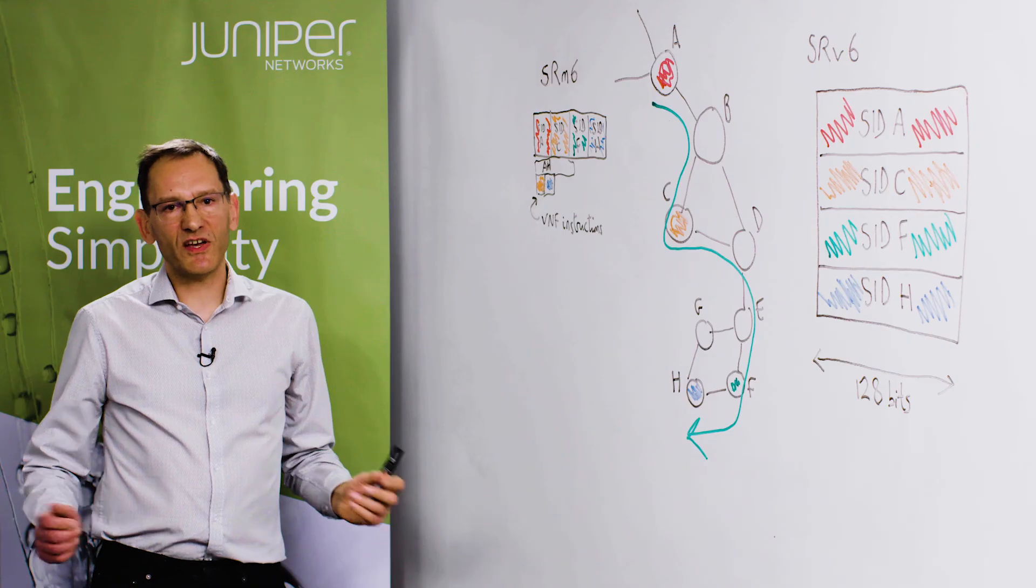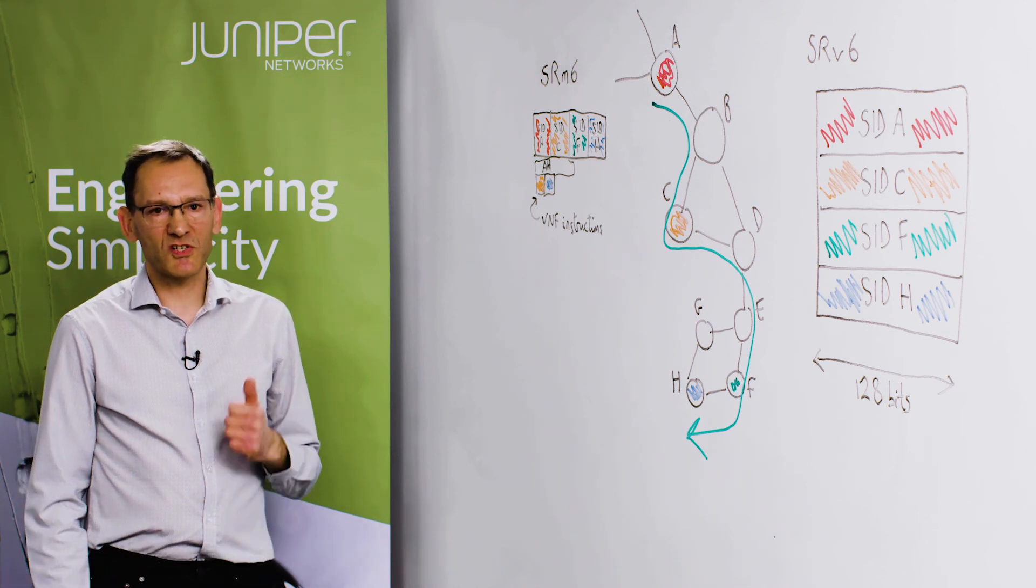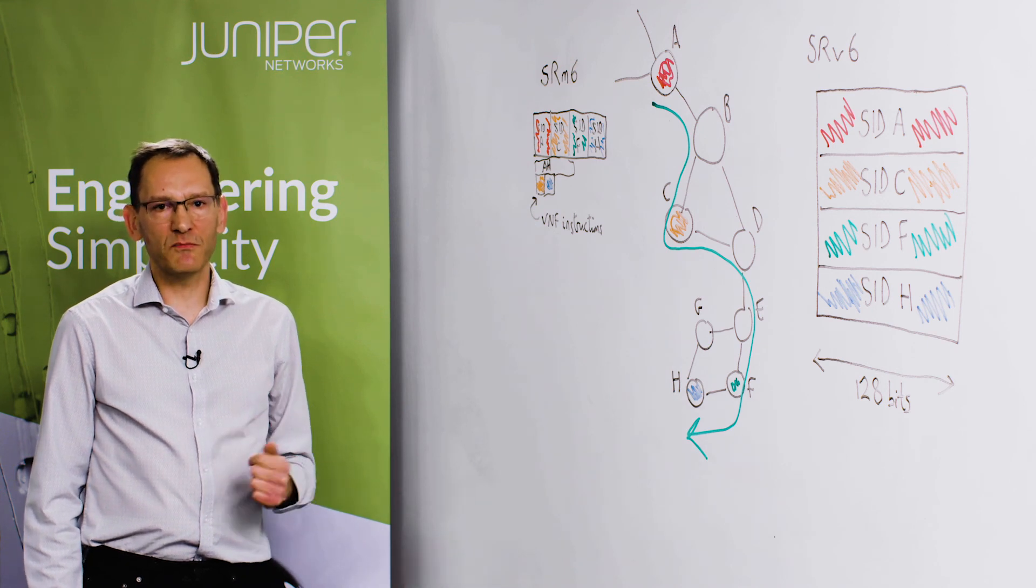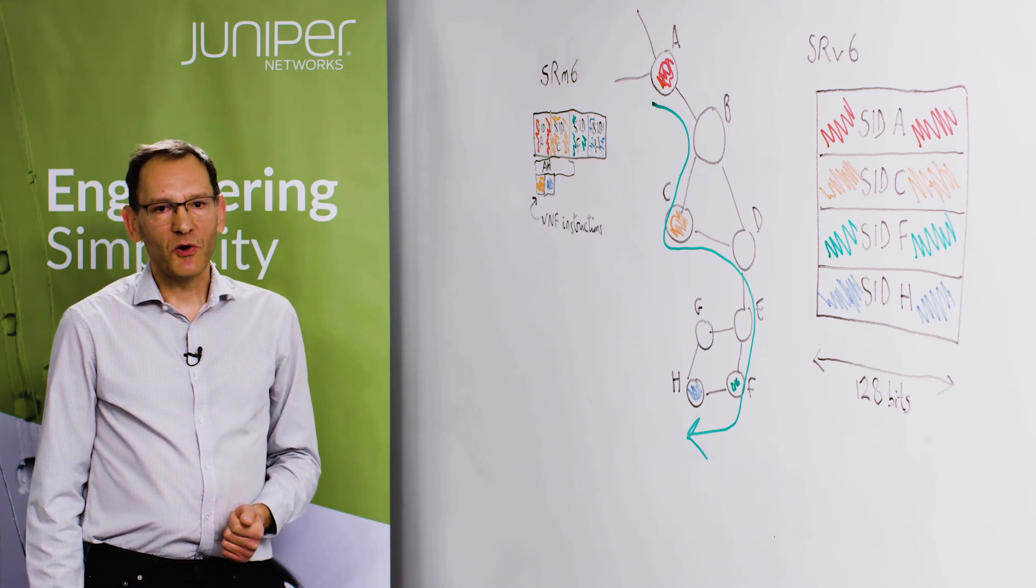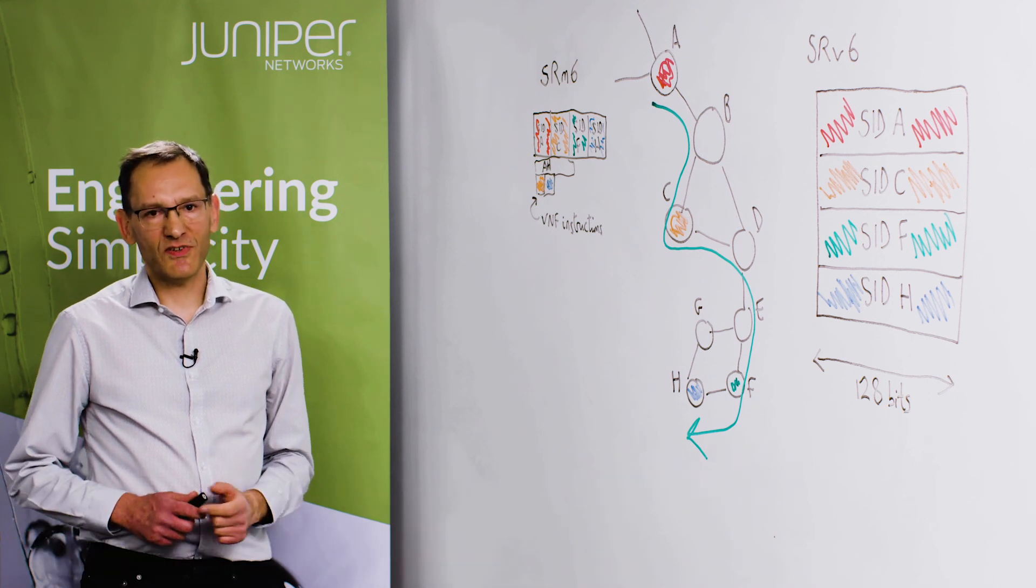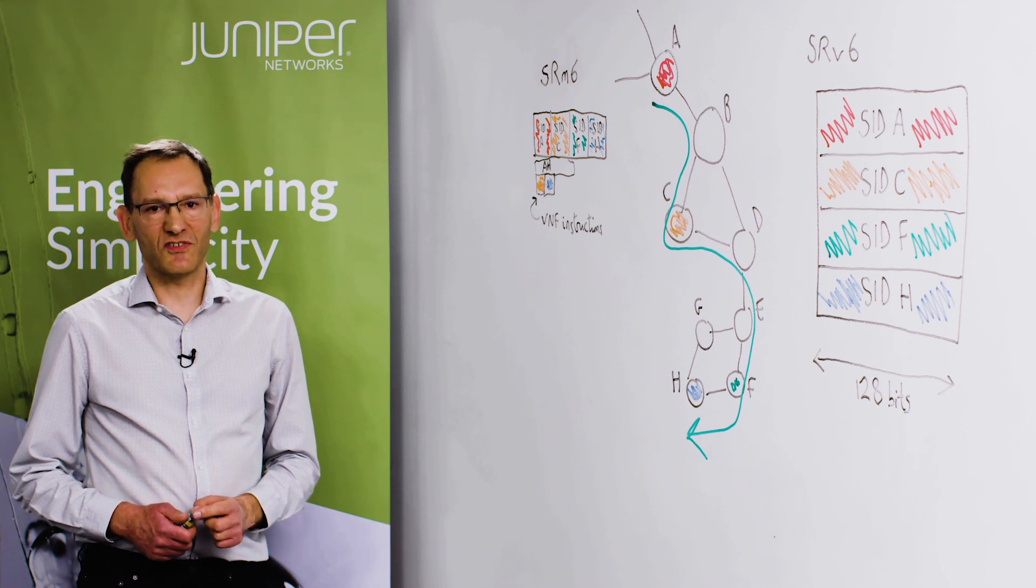So what are the benefits of SRM6 over SRV6? First of all, we saw that SRM6 is much more bandwidth efficient and also it means that an ASIC can process that many more SIDs. Also, you saw that we have a clean separation between SIDs and VNF instructions, and furthermore you can choose to authenticate those instructions if you need to.